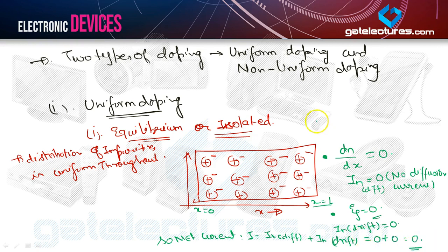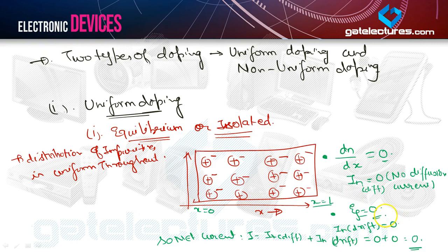Hence, for a uniformly doped semiconductor kept in equilibrium or isolated, there is no current which flows through the semiconductor, because nothing is connected externally. Also, dn/dx = 0, there is no built-in electric field intensity, so diffusion and drift currents will both be equal to 0.